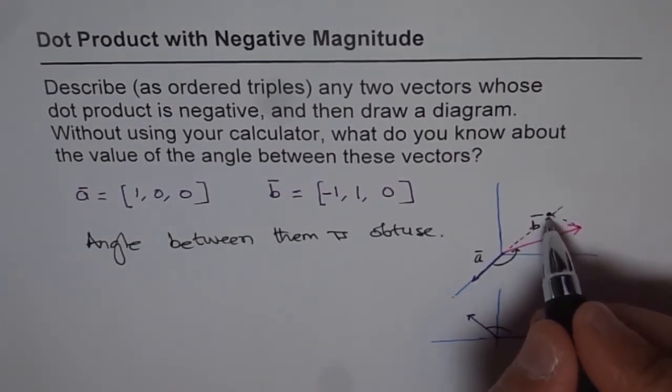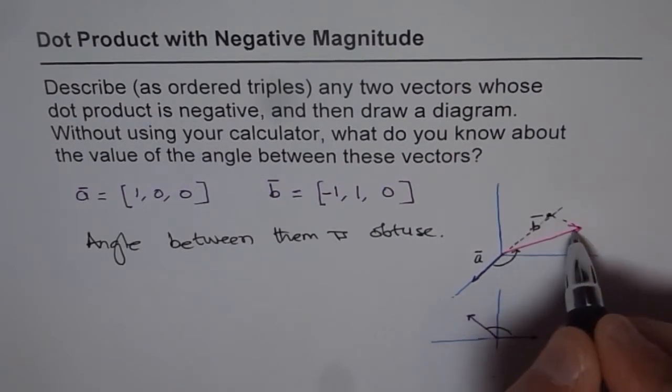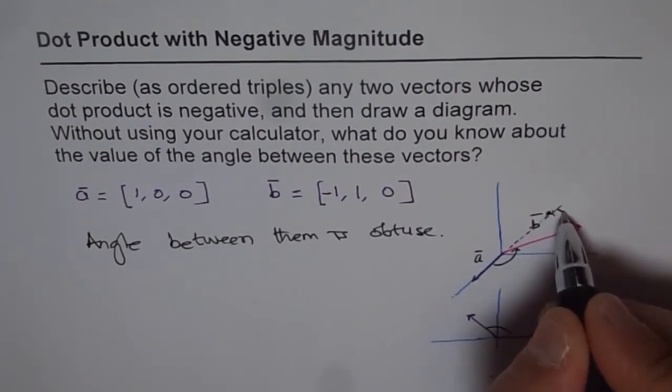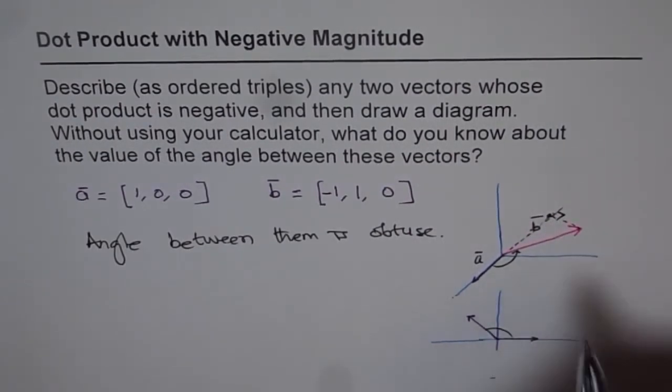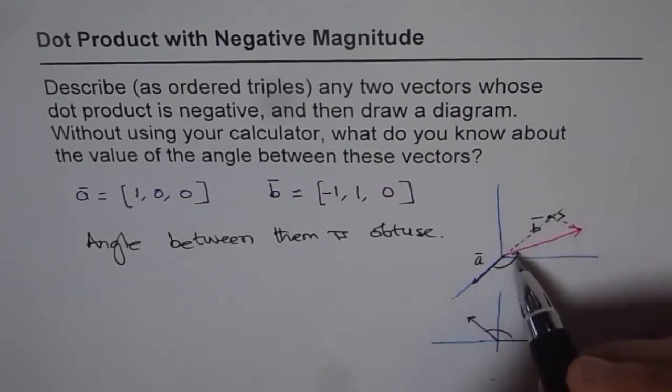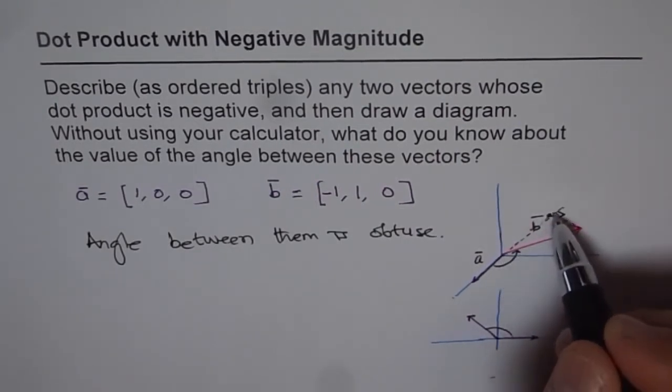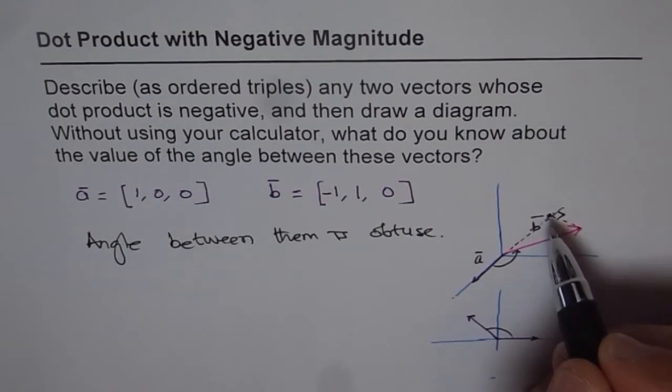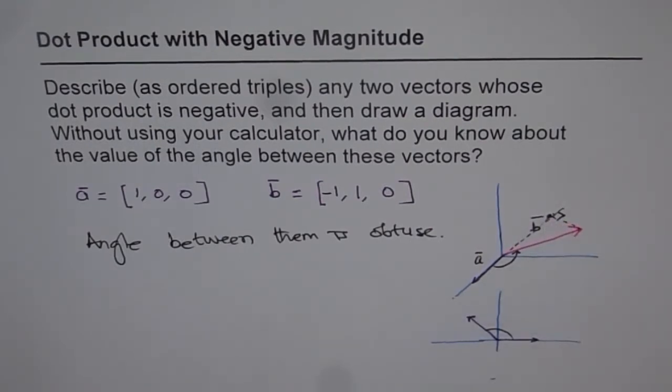So we get this magnitude from here to here as the dot product of a dot b. And since it is in the negative direction of x, it has a negative magnitude. So that is what it is. And the magnitude is going to be 1. So that is how we can do these kinds of questions. Thank you.